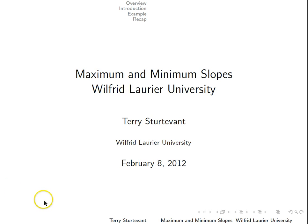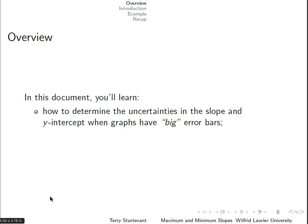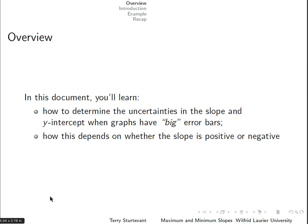In this short document, we'll talk about how to use maximum-minimum slopes in a graph. You'll learn how to determine the uncertainties in the slope and y-intercept when graphs have big error bars, and how this depends on whether the slope is positive or negative.